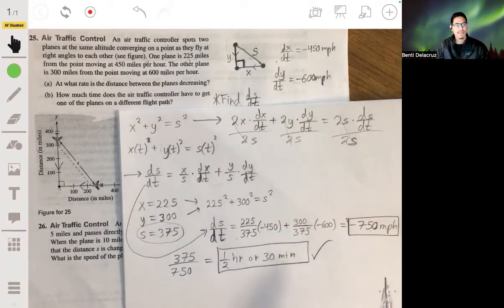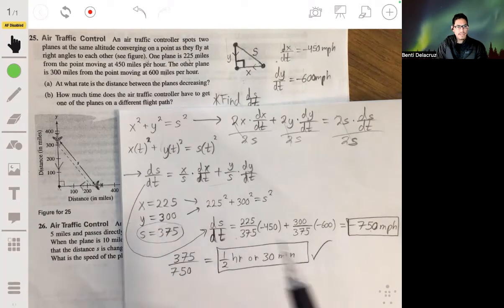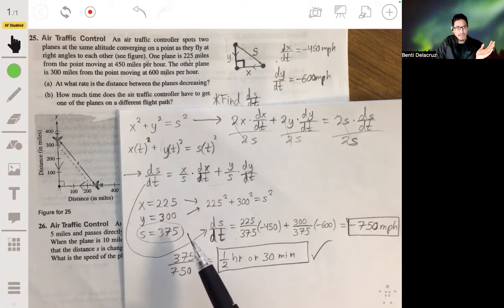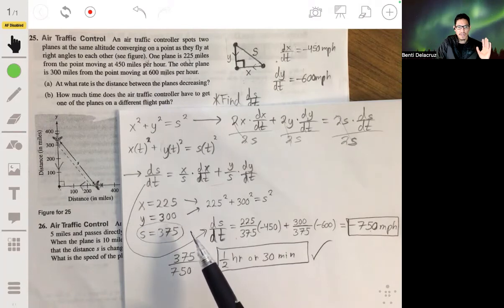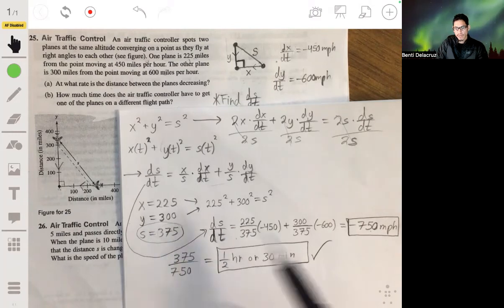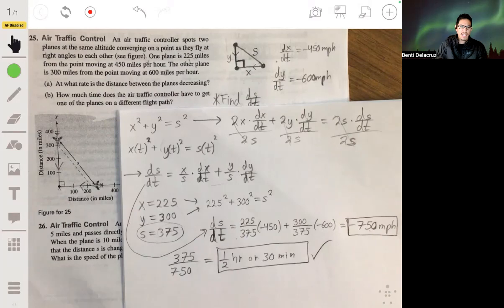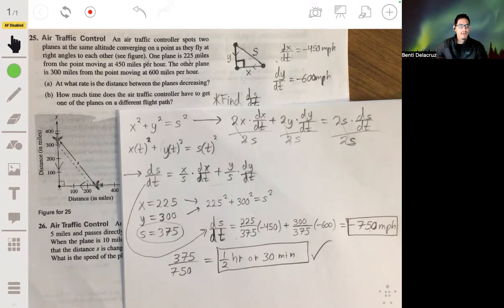Don't overthink this part because I've had students that will overthink this and it makes it a lot harder than it is. Just think logically - you don't need calculus for this. Again, if you have to go 375 miles and you're going at a rate of 750 miles per hour, it'll just take you 30 minutes to get there. That's all that is.